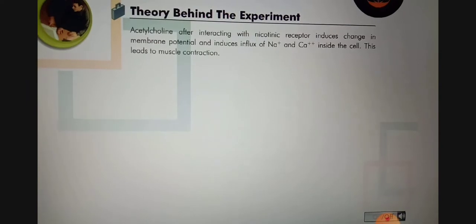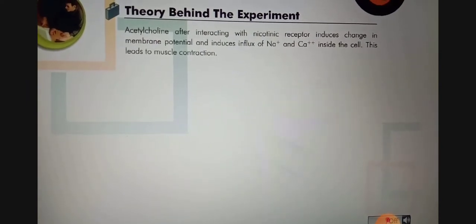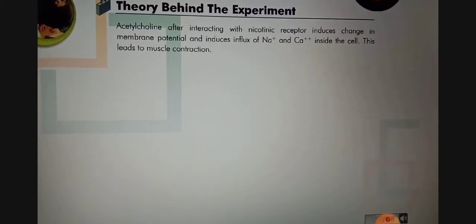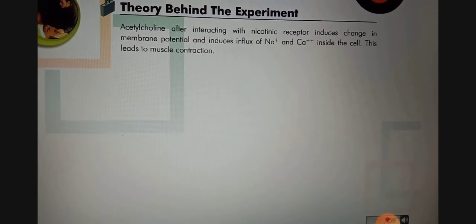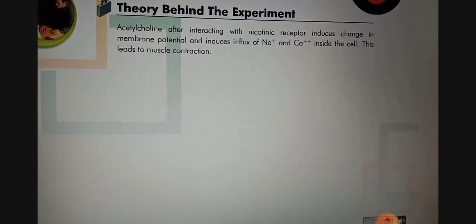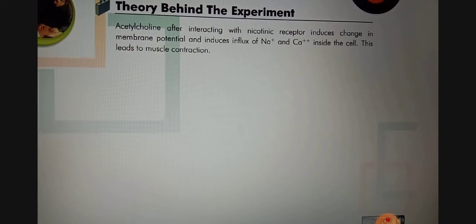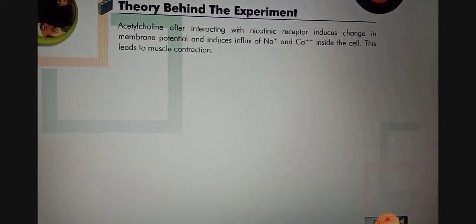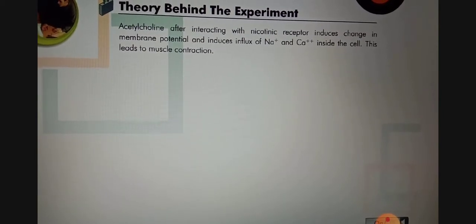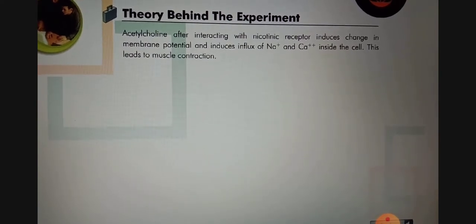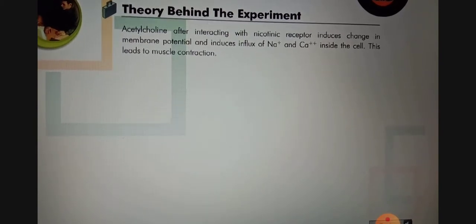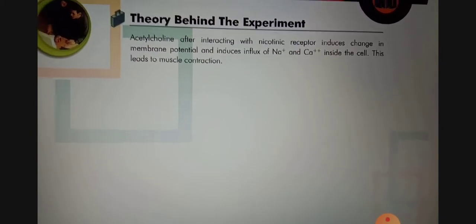Acetylcholine, after interacting with the nicotinic receptor, induces a change in membrane potential and causes influx of sodium ions and calcium ions inside the cell. This leads to muscle contraction. When acetylcholine binds to the NM type nicotinic receptor, it causes the opening of ion channels and influx of sodium and calcium ions, and this positive ion deposition inside the cell leads to muscle contraction.